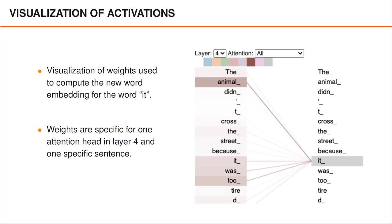It's possible to visualize the weights in different examples. In this example, the input sequence is: 'the animal didn't cross the street because it was too tired.' We are looking at the weights used to compute a new word embedding for the word 'it'. In this case, we give large weights to the word embeddings for 'animal', 'it', 'was', and 'too', which seems fairly reasonable since the word 'it' here refers to the animal.